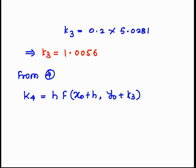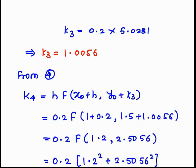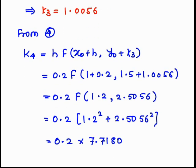Next, we calculate k₄ = h·f(x₀ + h, y₀ + k₃). Substituting h = 0.2, x₀ = 1, y₀ = 1.5, and k₃ = 1.0056, we get 0.2 × f(1.2, 2.5056). The function is x² + y², so computing this gives k₄ = 1.5436.